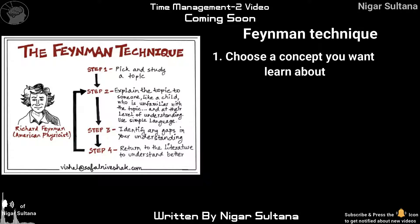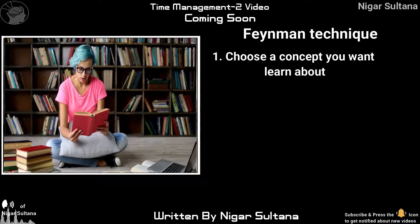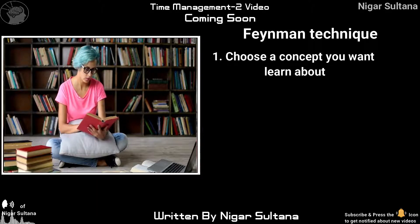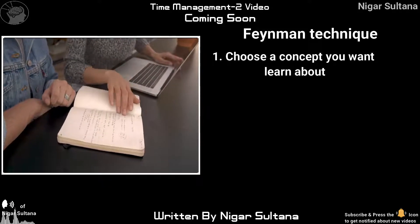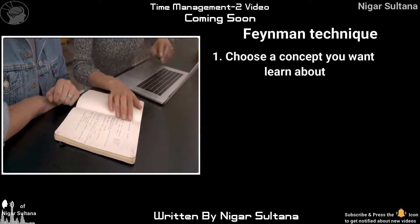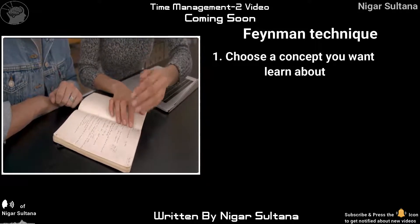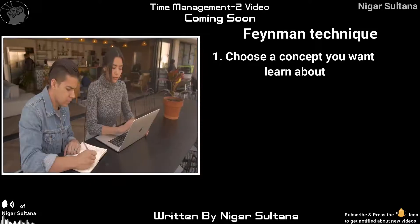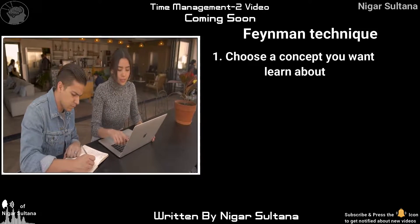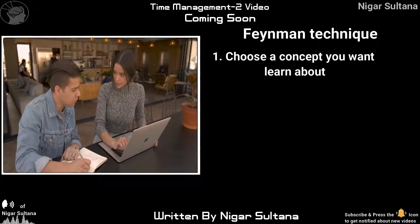Step 1: Choose the concept you want to learn. Select the topic, chapter, or subject you want to study. Take a white piece of paper, write the main topic at the top, then add sub-topics below with arrows and write three questions under each sub-topic to explore it deeply — for example, a chapter like 'the cell,' covering its details and how it works.